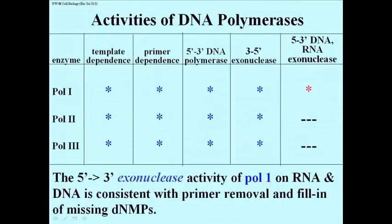If we compare the enzymatic activities of the three E. coli DNA polymerases 1, 2, and 3, it becomes apparent why DNA polymerase 1 is used to remove primers and to prepare Okazaki fragments for ligation. All of the DNA polymerases share the same properties, except that DNA polymerase 1 has a unique 5' to 3' exonuclease activity that doesn't discriminate between RNA or DNA. This activity includes replacing hydrolyzed RNA nucleotide monophosphates with new DNA nucleotides.